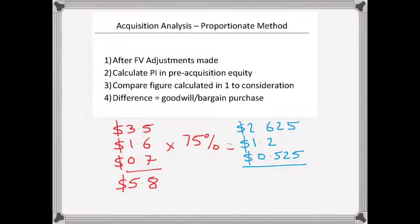Add these all together, and we end up with $4.35 million. We then take this number and compare that to the $5 million consideration. And the difference is $0.65 million.